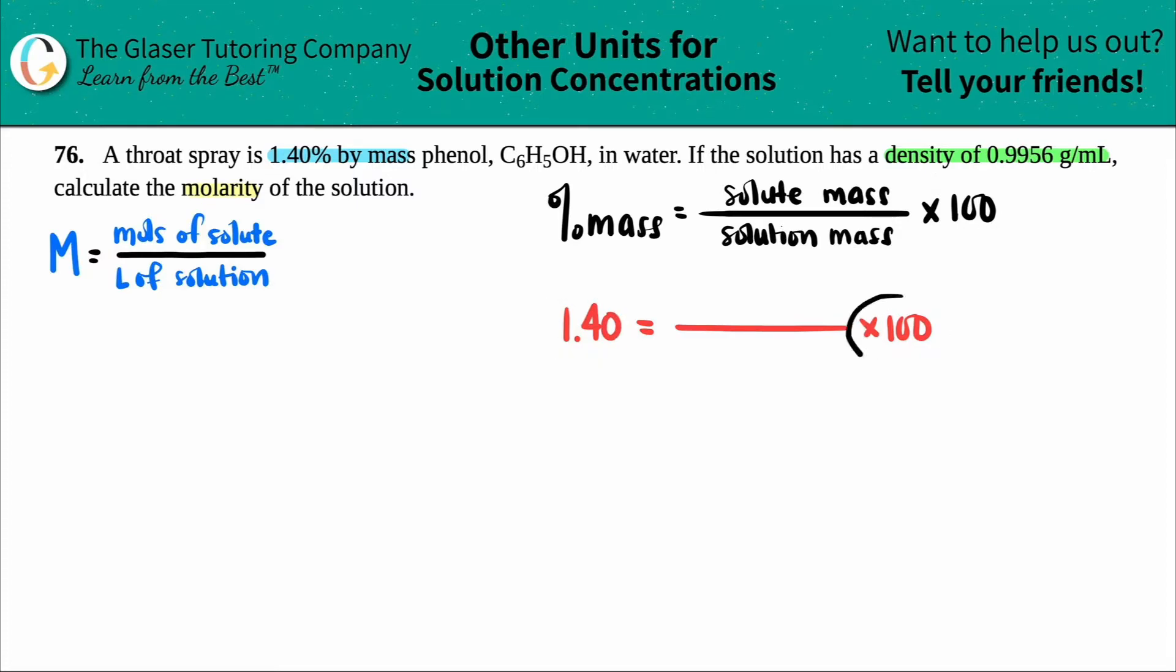I don't want this 100 here anymore. If I want to cancel out the 100, technically 100 should be on the bottom and those would cancel out. But my number is still 1.40, so what would be on the top? It would be 1.40. Now look at that—we have all of the numbers. I just found out what the mass of the solute is, and what the mass of the solution is: 1.40 grams of solute over 100 grams of solution.